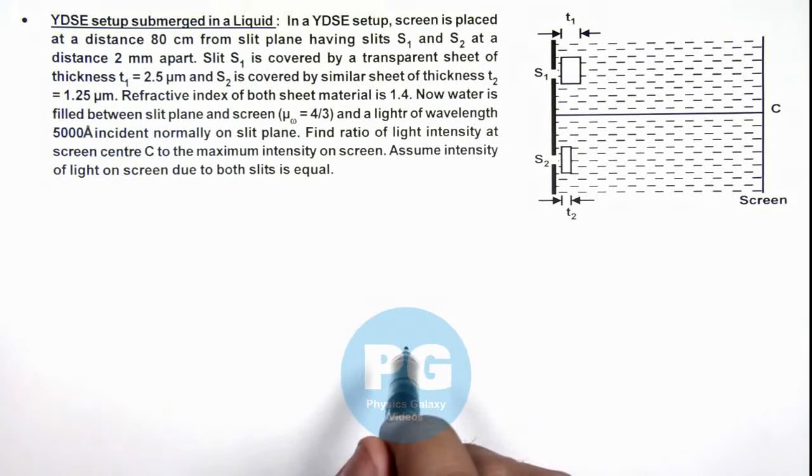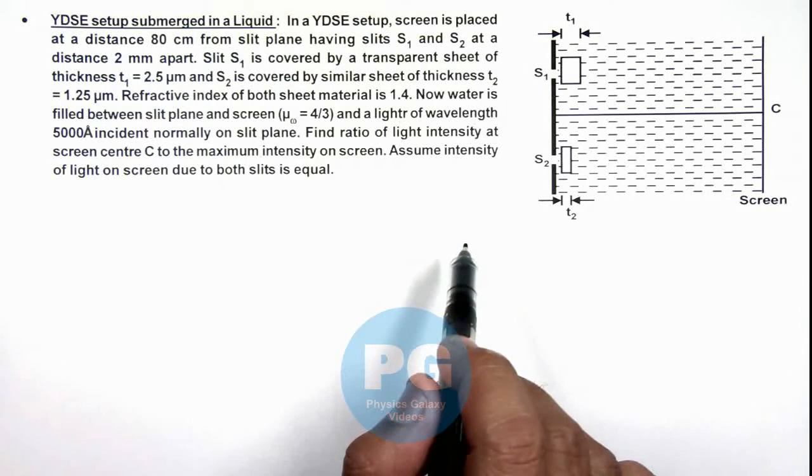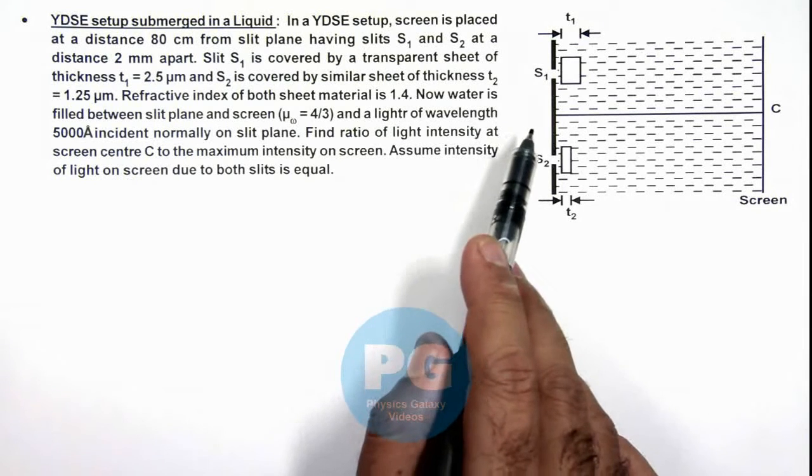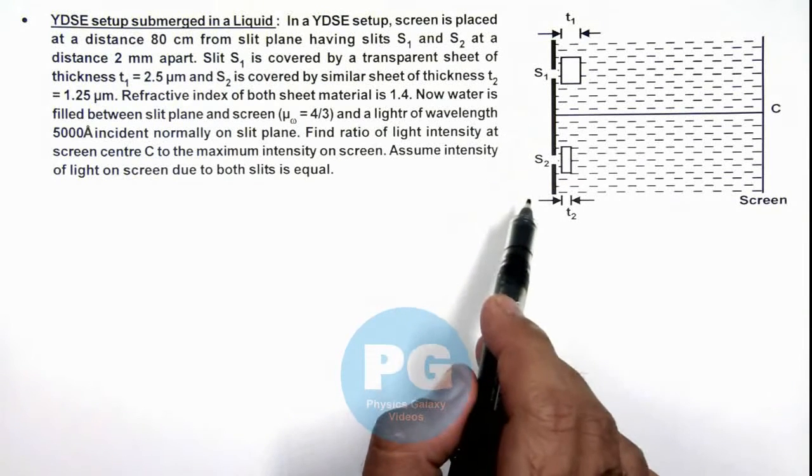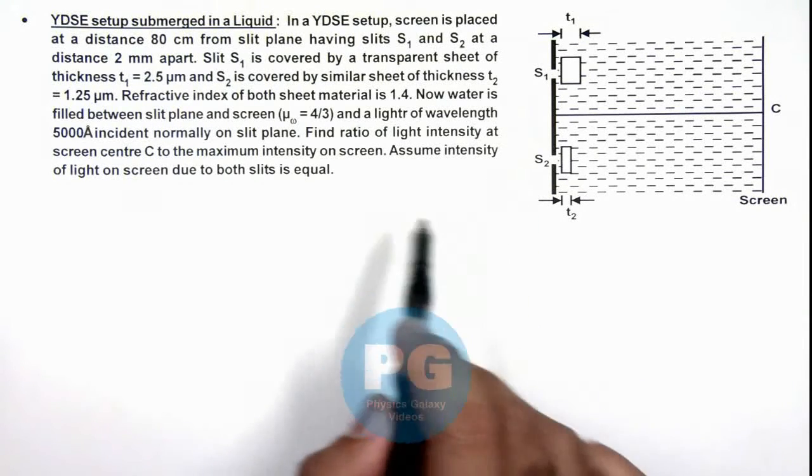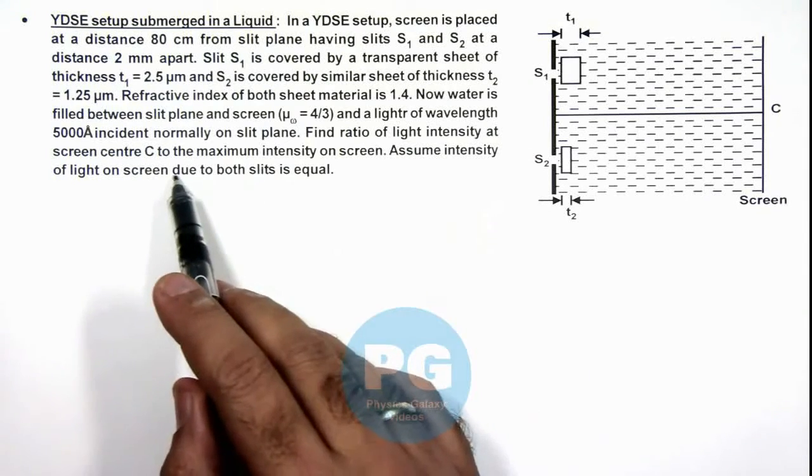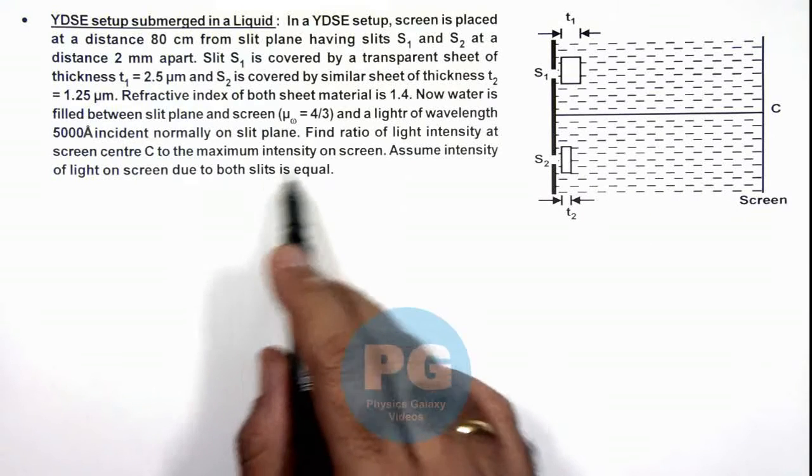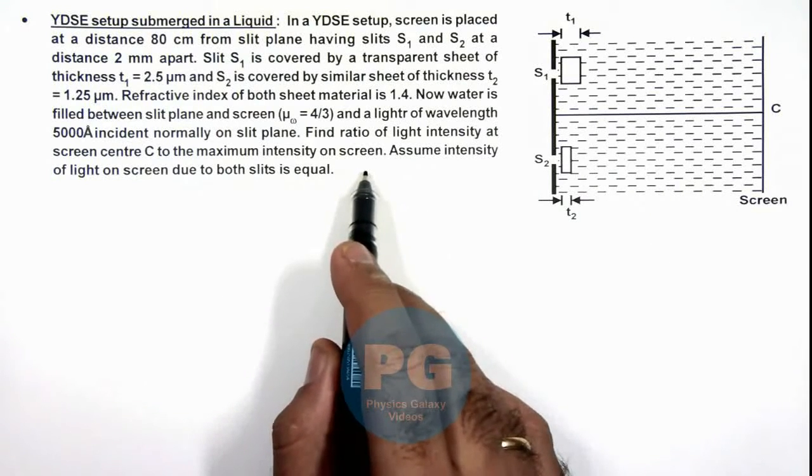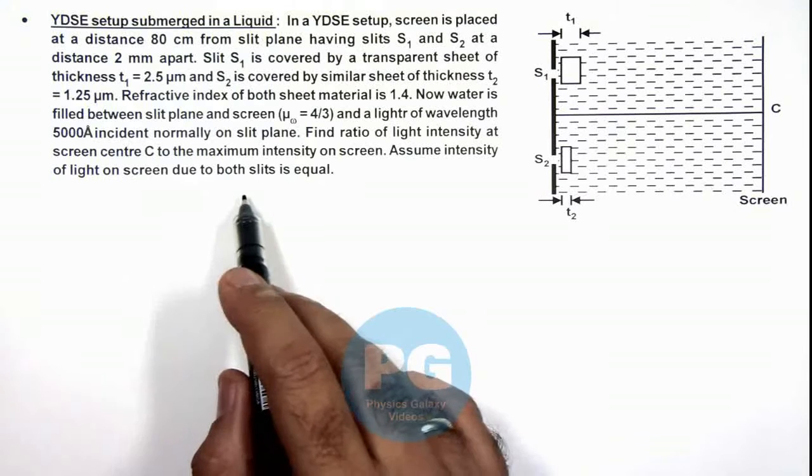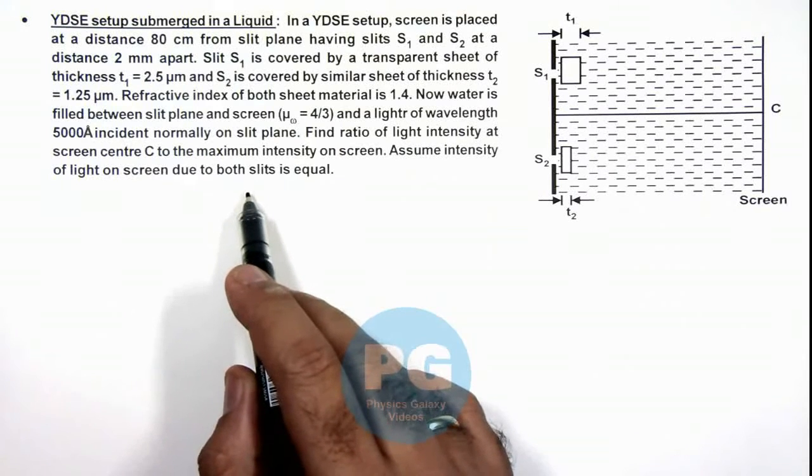Now it is saying, a light of wavelength 5000 angstrom is incident normally on the slit plane. We are required to find the ratio of light intensity at screen center C to the maximum intensity on screen. Assume intensity of light on screen due to both the slits are equal.